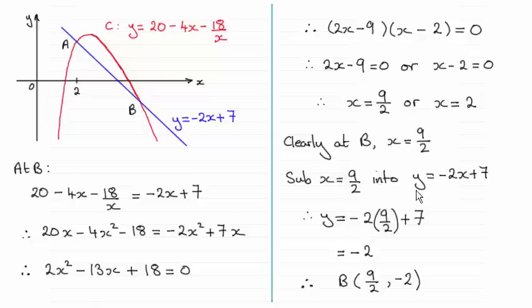And I just substitute 9 over 2 then either into this equation here or this one. It's much easier to sub it in this one though. So at B, you've got B has coordinates 9 over 2 for x and minus 2 for y.